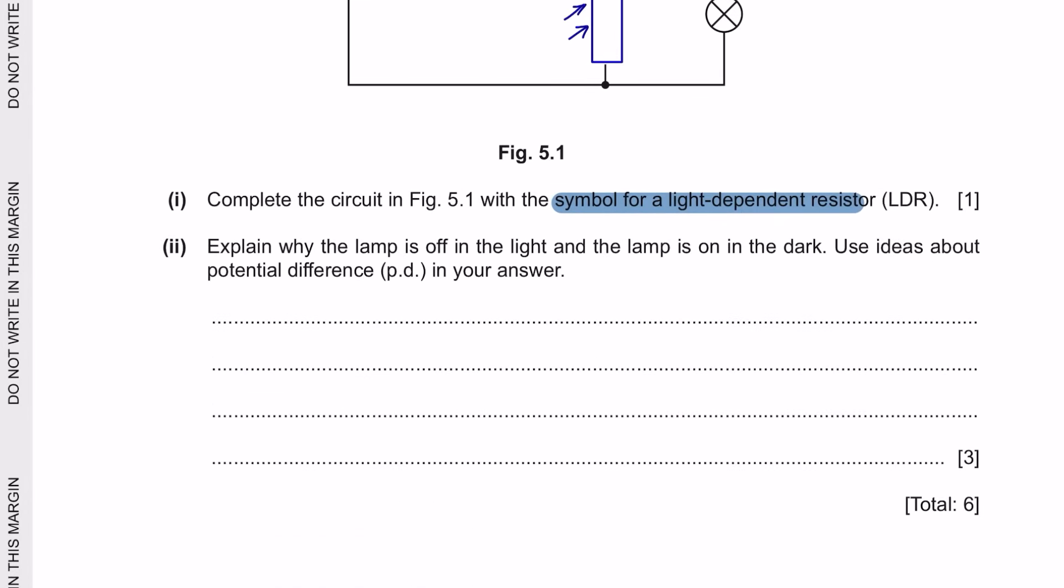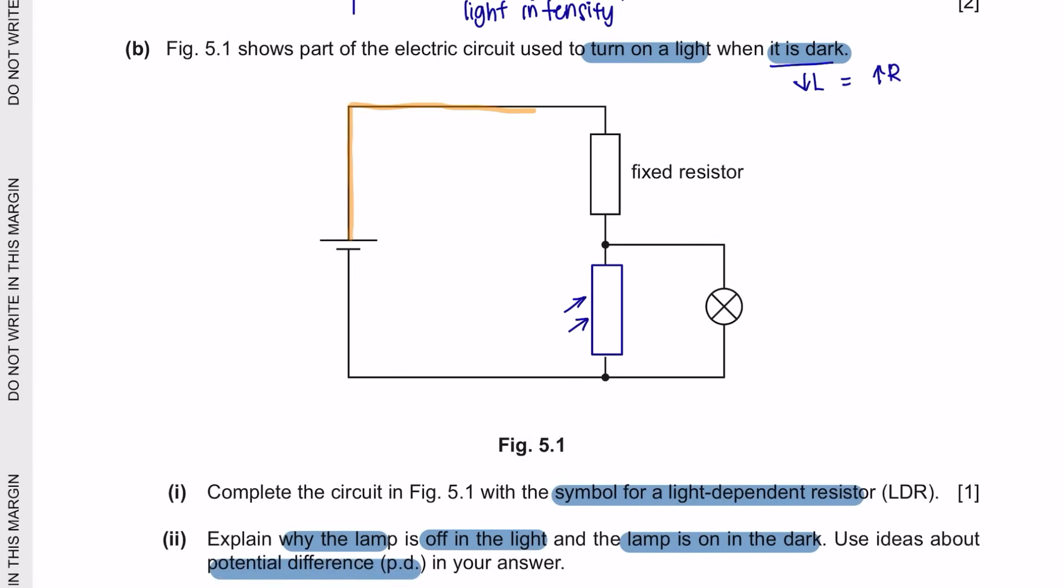Next question part 2. Explain why the lamp is off in the light and the lamp is on in the dark. Use ideas about potential difference in your answer. What we see here is actually a setup of a potential divider. And I'll explain to you. We've got here two resistors, fixed resistor, and LDR connected in series. And let's say each of them are of the same resistance. And if I've got 10 voltage, then each of this resistor will receive 5 voltage each. And if I attach another component, for instance, a lamp in this case, in parallel to my resistor, the lamp will also receive 5 voltage. So the lamp will only get as much voltage as the component parallel to it.